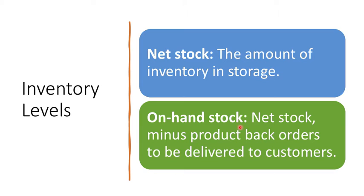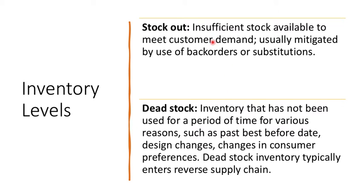On-hand stock is what you have on hand minus backorders, because backorders are orders you need to deliver but can't fulfill at that moment — maybe you don't have sufficient inventory. So you subtract those orders from net stock, and whatever is left is your on-hand stock.